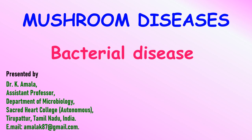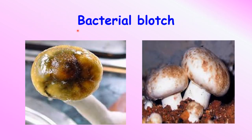The first bacterial disease is bacterial blotch. Blotch means it is a scary and irregular patch that can appear on the pileus of the mushroom. The brown color can develop from the pileus and affect the entire surface of the mushroom. Blotches appear in the early button stage of mushroom; the spots get enlarged and cover the entire part of the mushroom. Finally, the mushroom appears brown or tan in color.